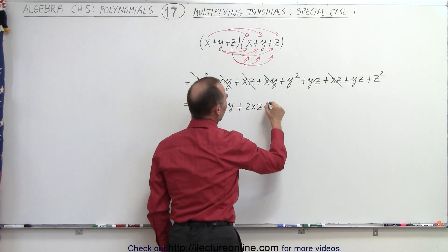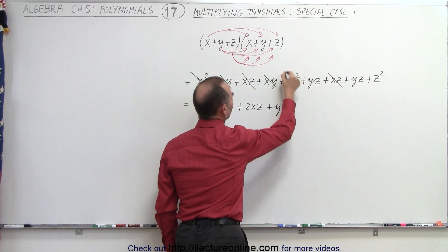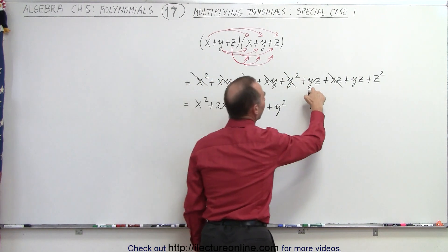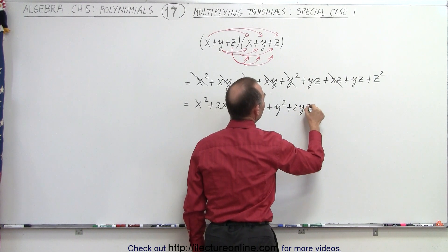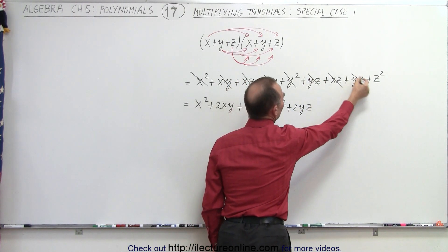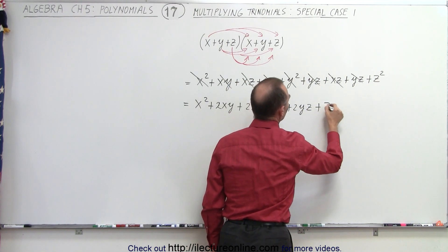And then we have a +y². Put a line through that one. Now we have a y times z plus a y times z, that would be +2yz. Put a line through those. And then we have one term left +z².